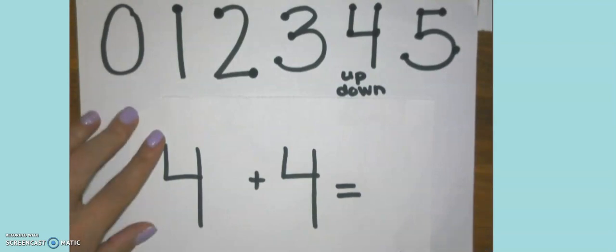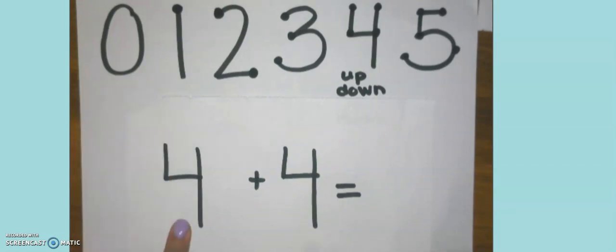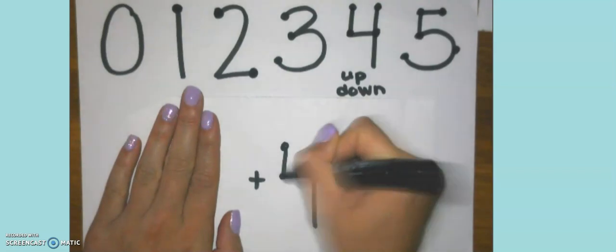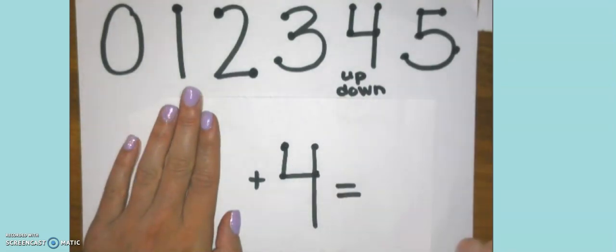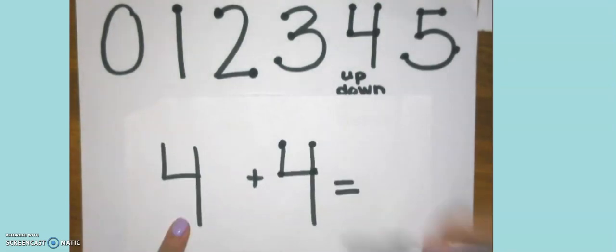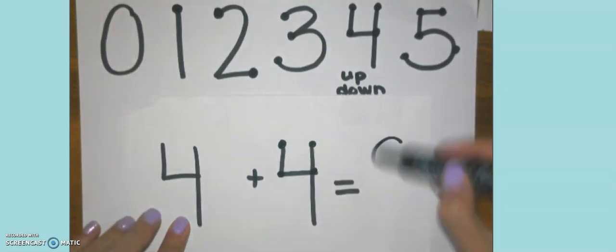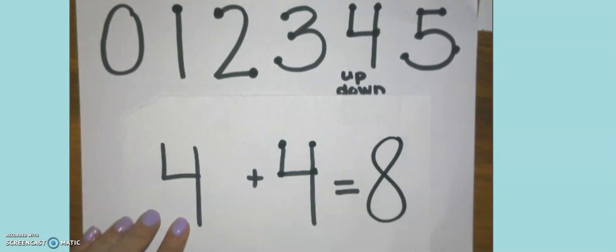Here's an interesting problem. Four plus four. This is a double. Now, neither of these are bigger than the other. So you can pick if you want to draw on the first four or the second four. I'm going to draw my touch points on the second four. So four, one, two, three, four. Here we go. Four, five, six, seven, eight. And that's all I need to do.